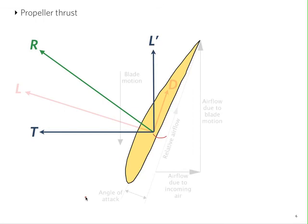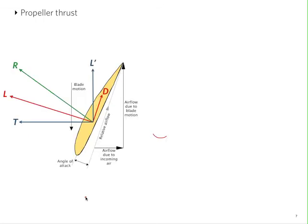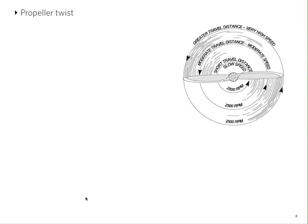So that's how we generate thrust in a propeller. In addition to that, notice that propellers are twisted along the blade. Near the hub, the rotational speed is lower. Near the tips, the tangential speed is maximum. So to maintain an ideal angle of attack along the blade length, we need the propeller to be twisted. So again, the tangential velocity on each section of the blade is different, and a different angle of attack is needed to obtain the best performance.